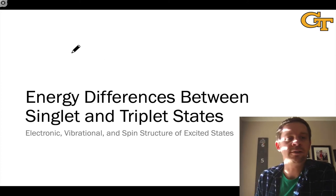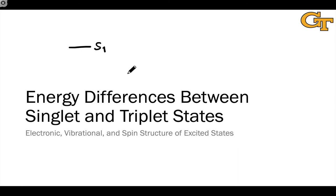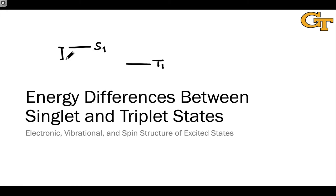The typical situation — and in fact the universal situation — is that the triplet state is lower in energy than the singlet state. They are either equal in energy or the triplet state is lower in energy than the singlet state. This always holds true. We're going to define and use this energy difference as delta EST, the energy difference between the singlet and triplet states, where by convention we use this as a positive number.